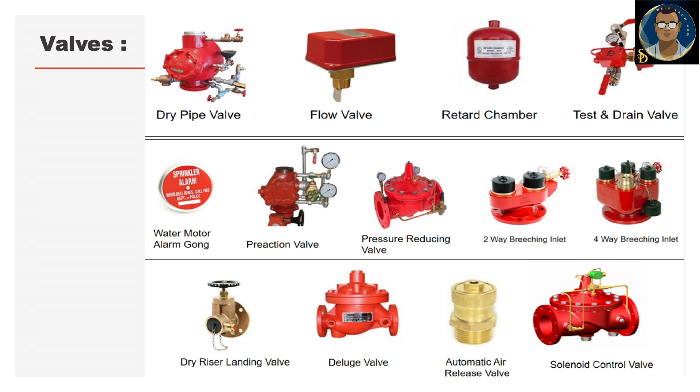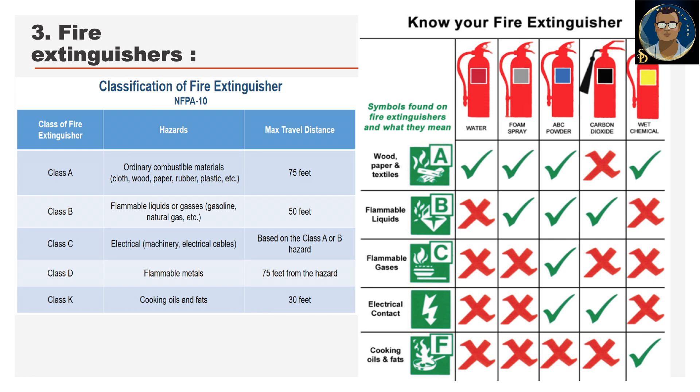Fire extinguishers are portable devices that allow occupants to suppress small fires quickly. Primary types and their applications: water extinguishers are suitable for Class A fires involving ordinary combustibles like wood, paper or cloth. Dry chemical extinguishers are effective for Class A, B and C fires — very extensively used — involving flammable liquids, gases and electrical equipment. CO2 extinguishers are ideal for Class B and C fires as they displace oxygen and extinguish fire without leaving residue. Foam extinguishers are suitable for Class A and B fires, as the foam creates a barrier between fuel and oxygen.